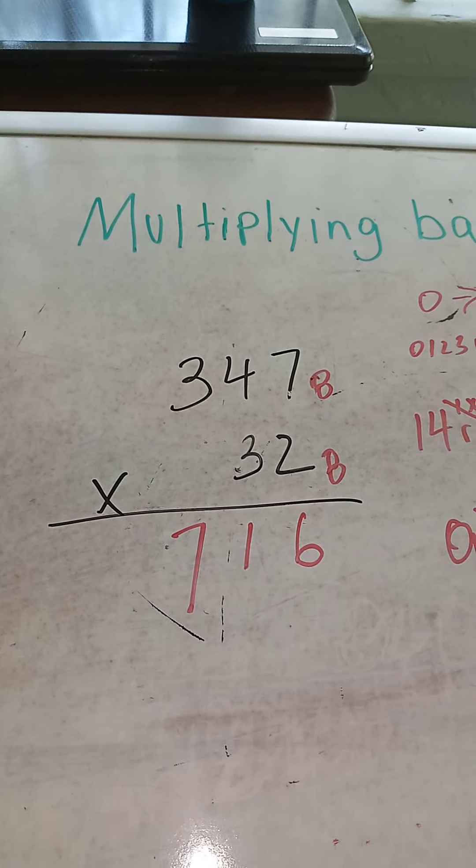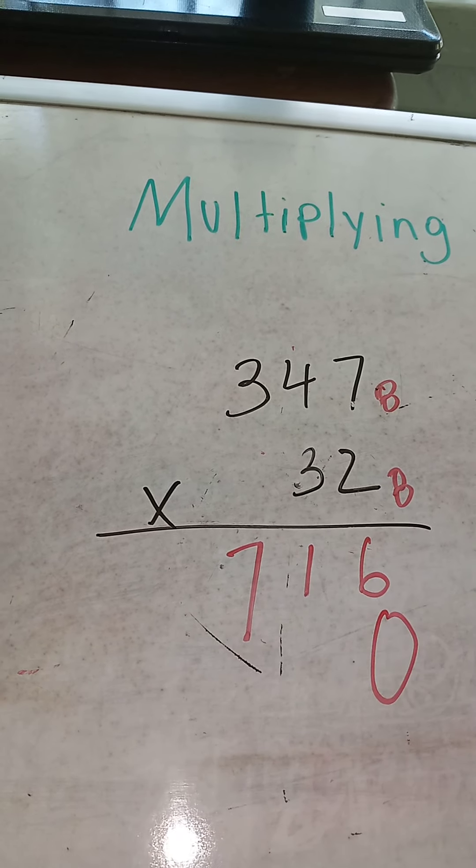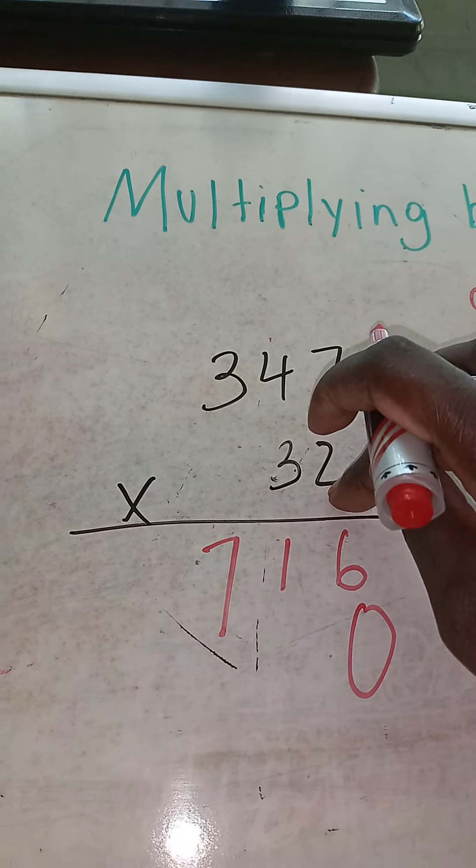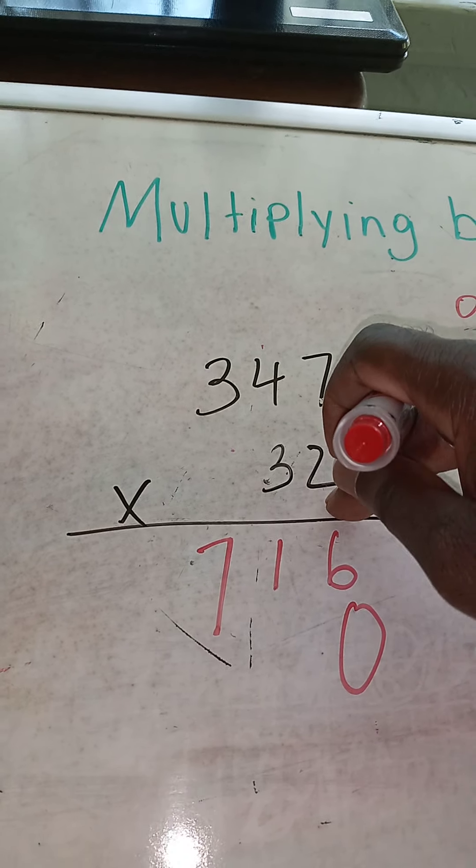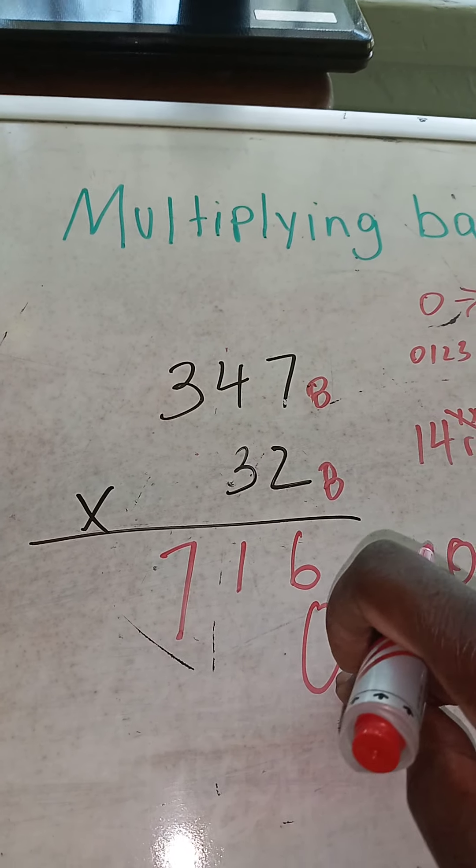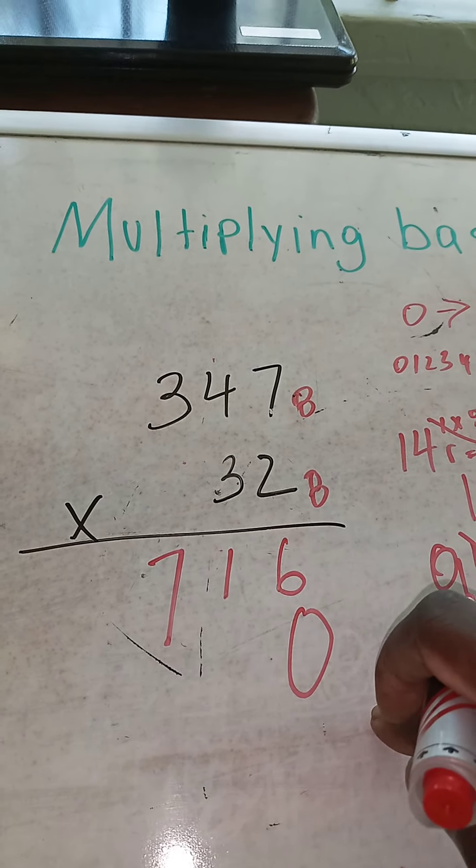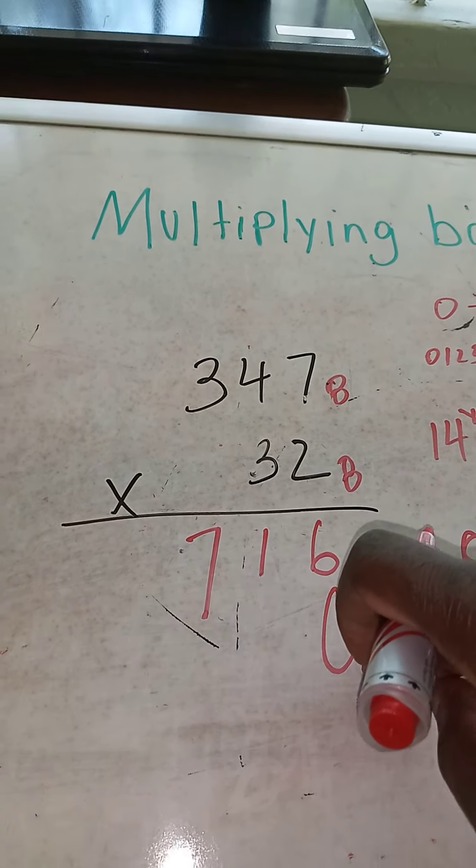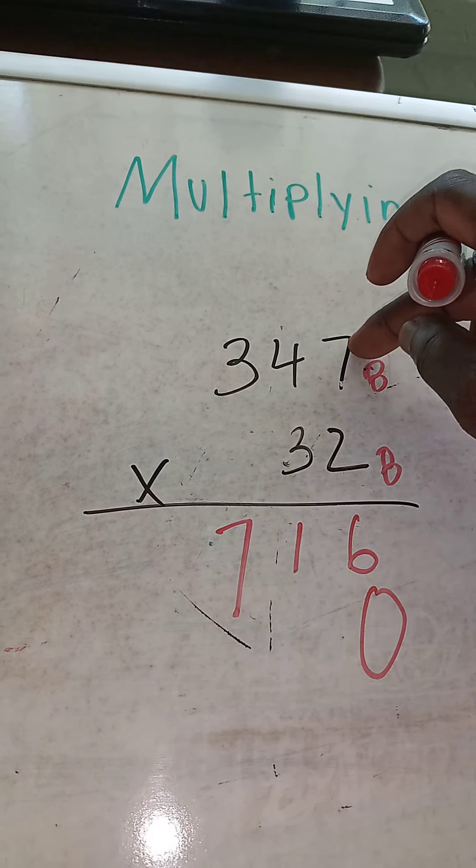We'll put a 0 here because we're no longer dealing with the 1's position. 2 was in the 1's position. We're now dealing with the 10's position. 3 is in the 10's position, and we'll put a 0 here, like 10 as 1, 0.